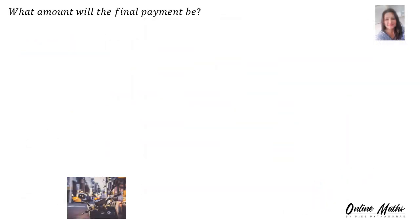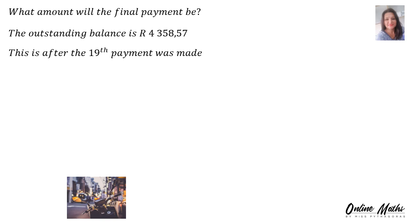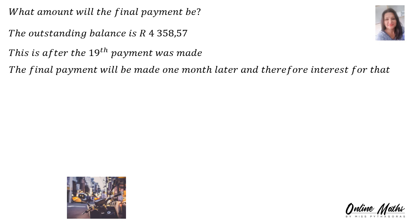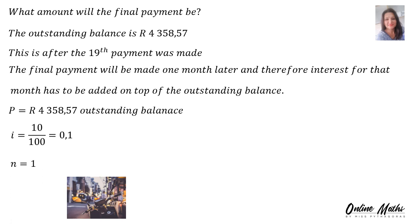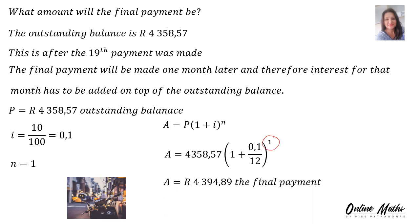The last question is: what amount will the final payment be? The outstanding balance is 4,358 Rand — this is after the 19th payment was made. The final payment will be made one month later, so interest for that month has to be added on top of the outstanding balance. P is 4,358 Rand, I is 0.1, and N is 1, just for that one month. Into the compound interest formula, we substitute: outstanding balance times bracket 1 plus 0.1 divided by 12, to the power 1. Therefore, the final payment will be 4,394 Rand and 89 cents.